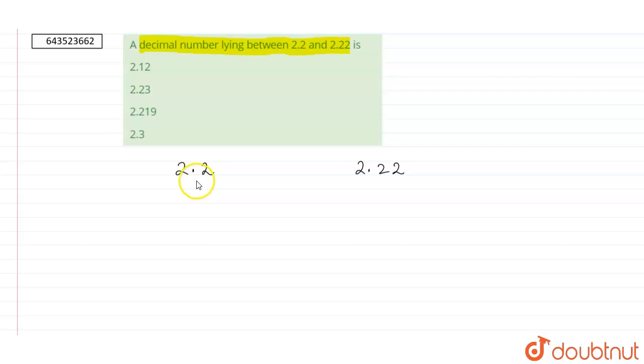Like decimal numbers have equal numbers of digits after the decimal point. To make them like decimal numbers, I will put a zero here, as putting a zero on the right side after the decimal does not make any difference.